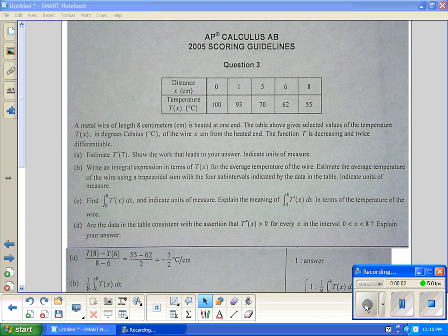We have a 2005 question 3, AP Calc. It's got a table that says distance and temperature. A metal wire of 8 centimeters is heated on one end. The table above gives the values of temperature T(x) in degrees Celsius of the wire x centimeters from the heated end. At the heated end it's 100 degrees and at the other end it's 55 degrees Celsius, and it decreases as the length increases, which makes sense in a real general situation. The function is decreasing and twice differentiable, meaning the first derivative and the second derivative exist.